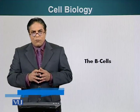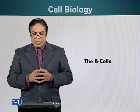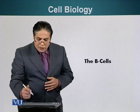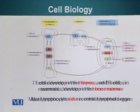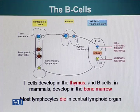Let's talk about the B cells. The B cells are produced in the bone marrow from precursor cells. B cells are also matured in bone marrow.